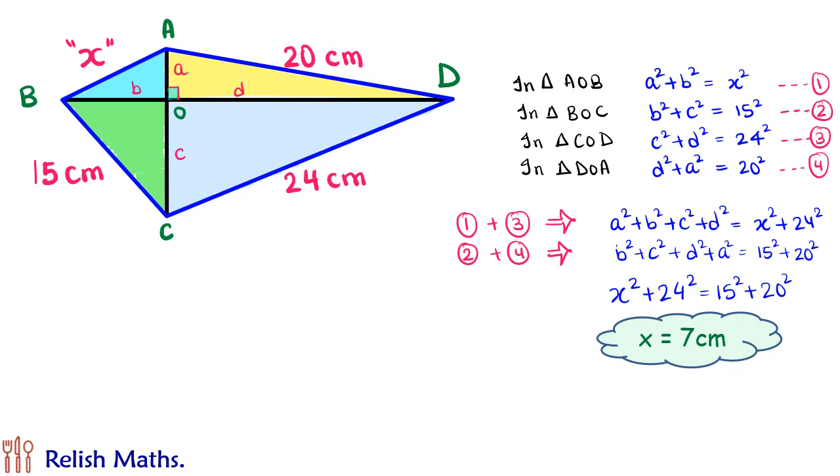From here we can derive the result that in any orthodiagonal quadrilateral, the sum of squares of opposite sides are equal.